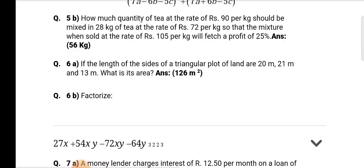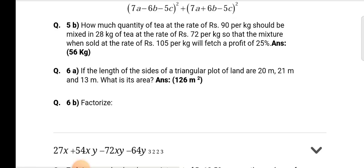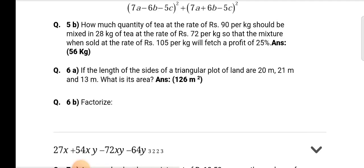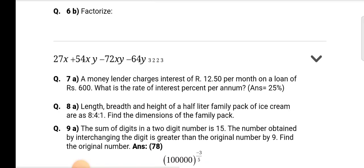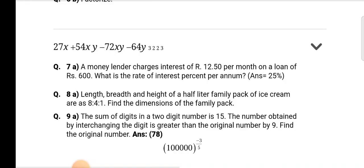Question number 6b: Factorize 27x plus 54xy minus 72xy minus 64y.